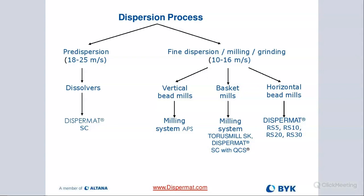We have a range of different products: vertical bead mills which we call the APS system, basket mills which are very popular and gaining a lot of traction, and a range of horizontal bead mills. We also have the Dispermat SC in production — basically our manufacturing-size dissolver that can go up to 2,500 liters of material.